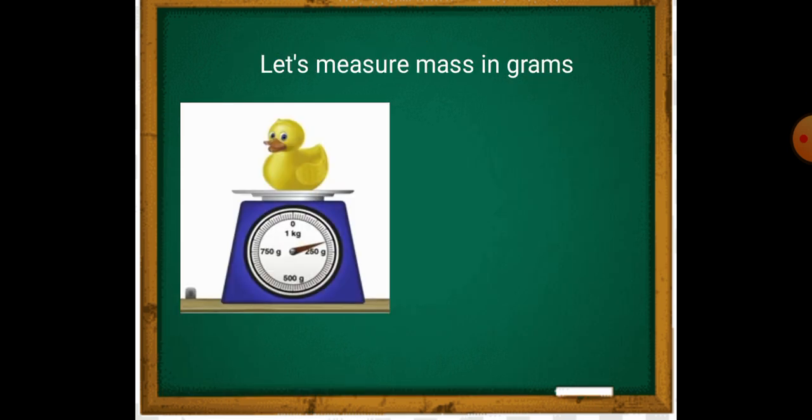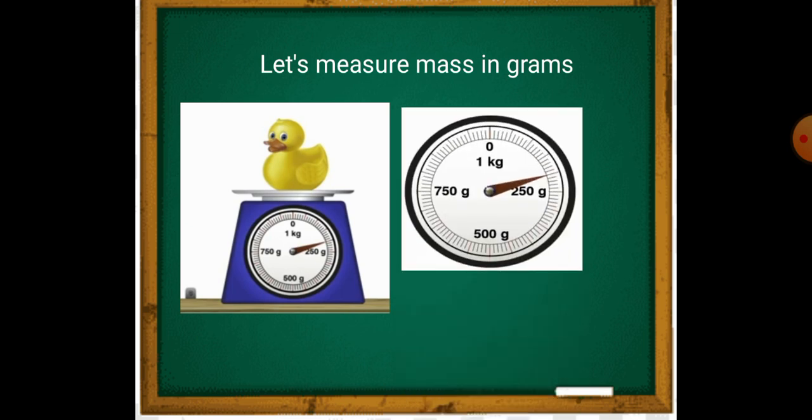Let's measure the mass of a toy duck. Every five lines on the scale equal 50 grams, 100 grams.